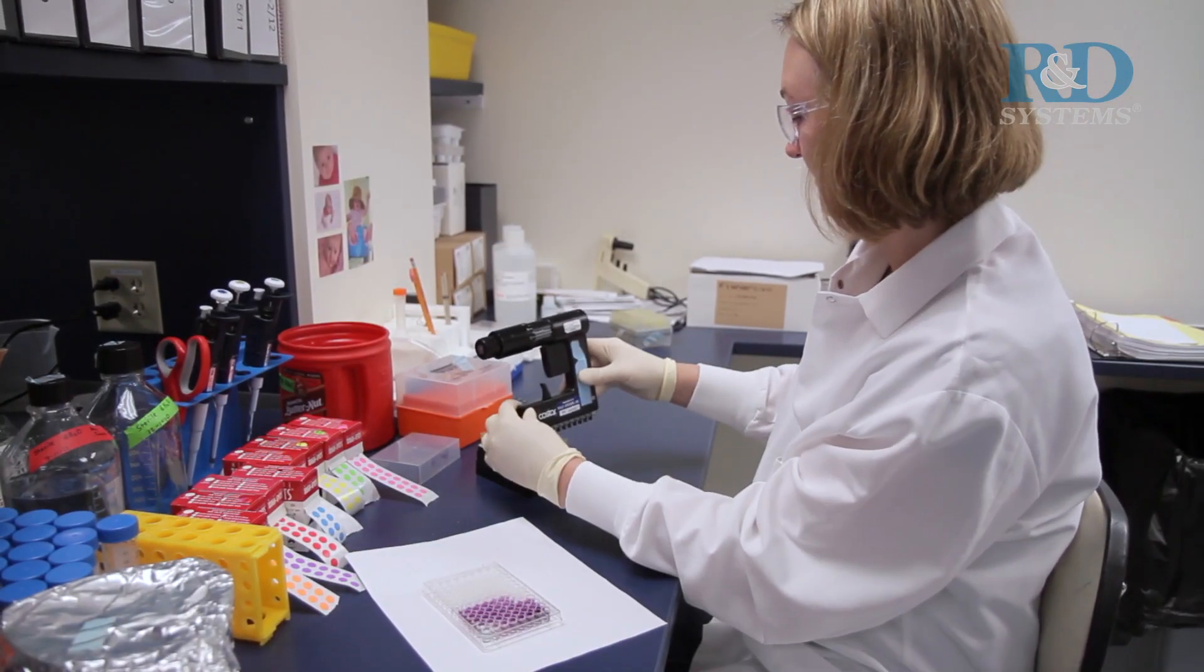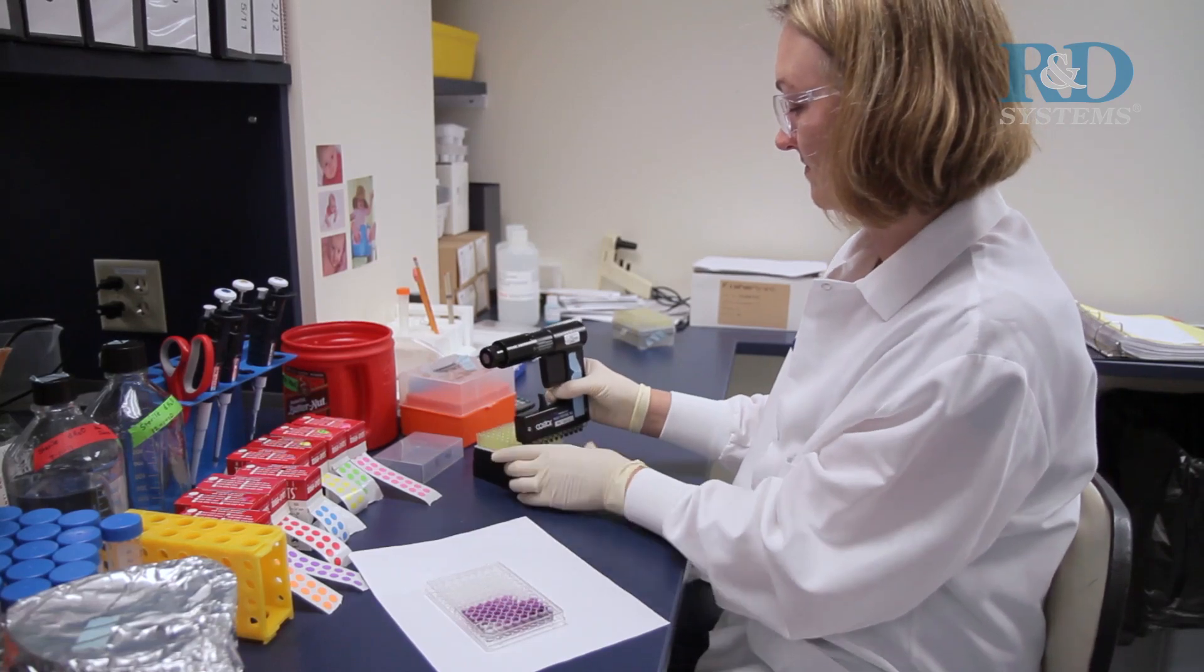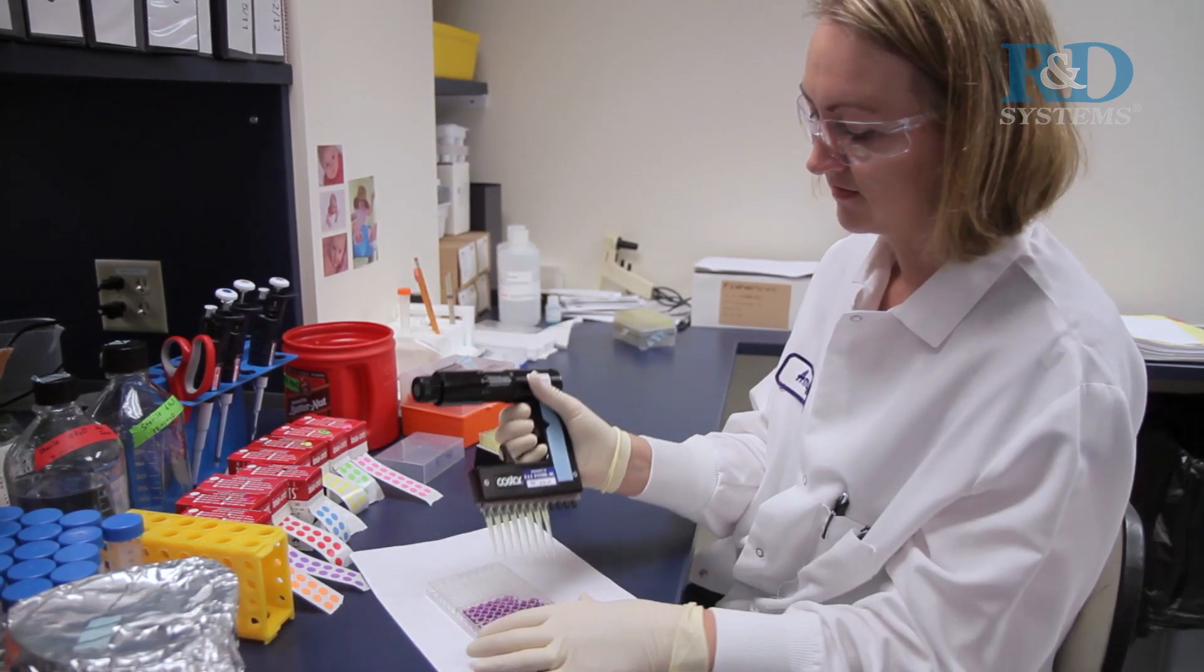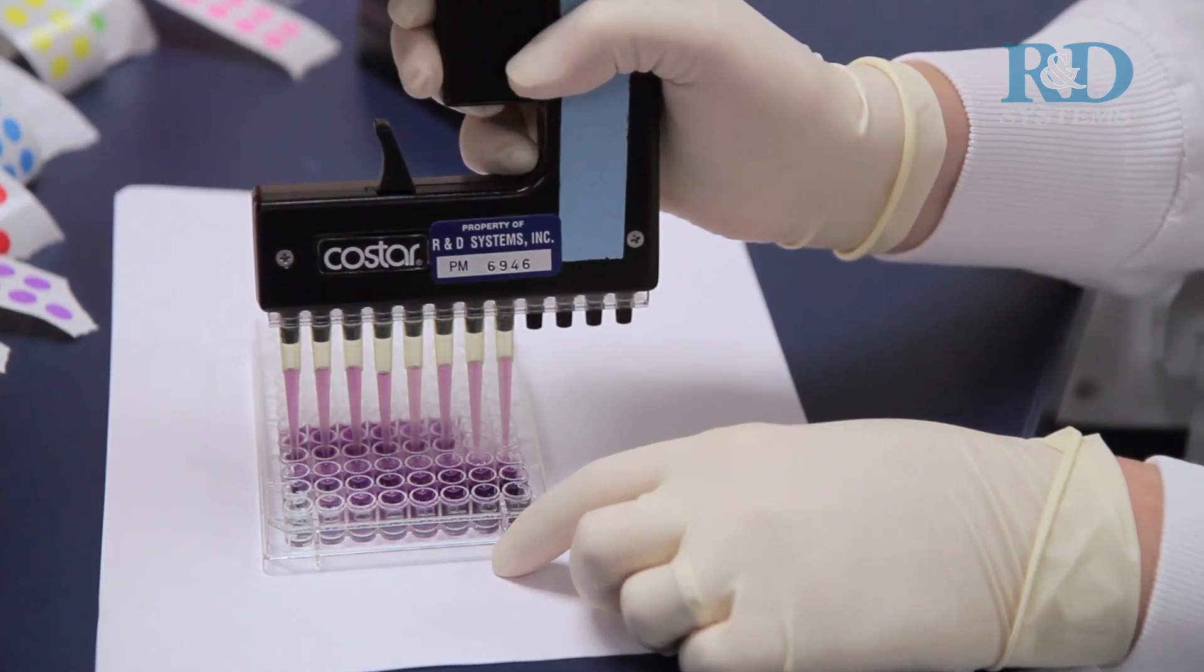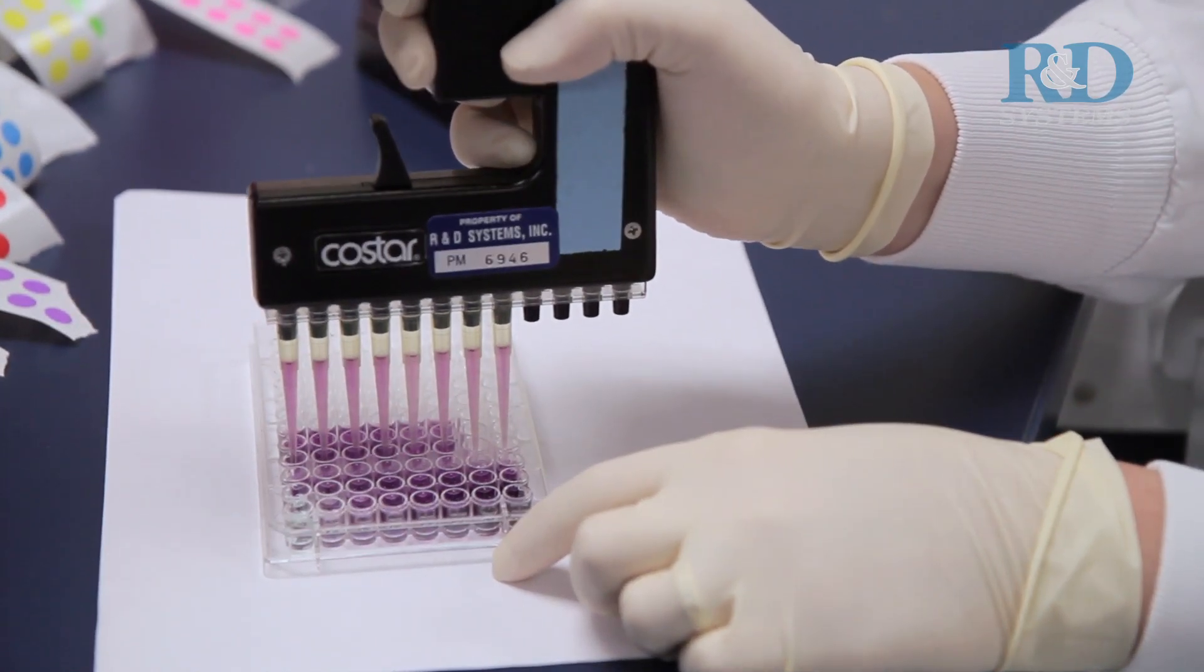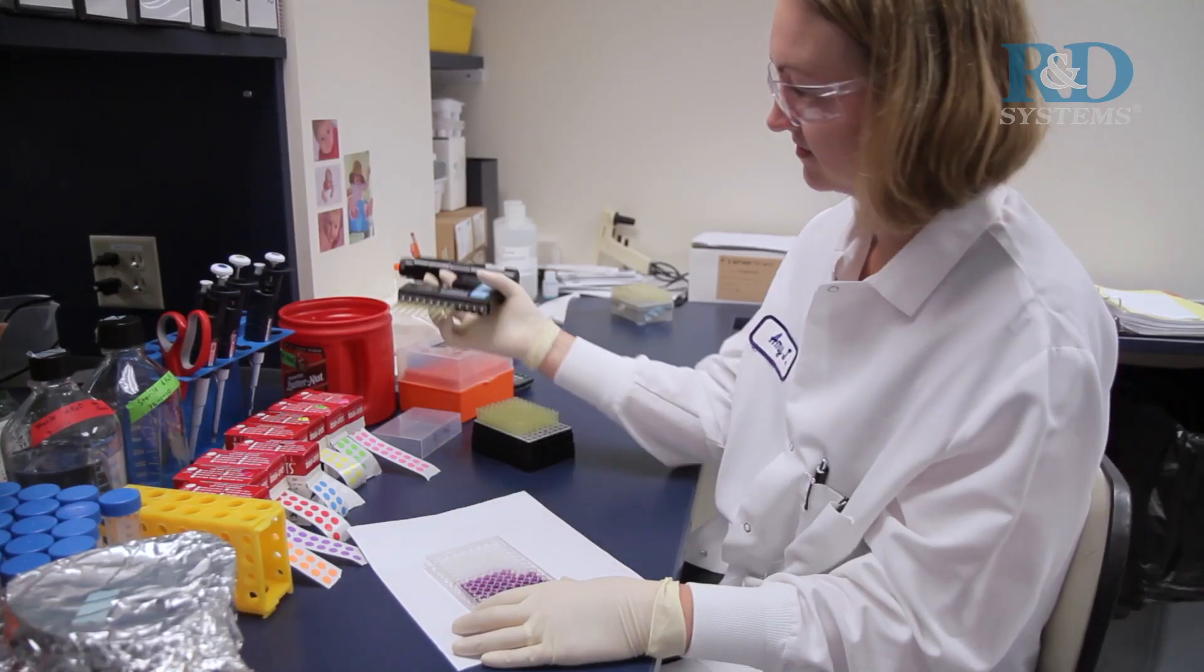Lysate concentration should be measured using a bicinchoninic acid assay. Lysate concentration may be empirically adjusted for optimal sensitivity and low background. A range of 100 to 300 micrograms of lysate is recommended as an initial starting point.